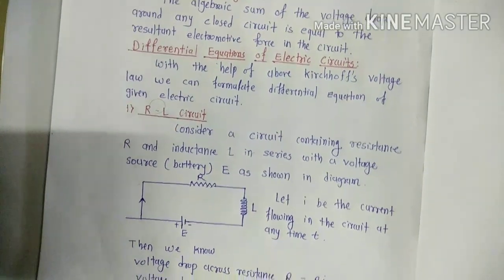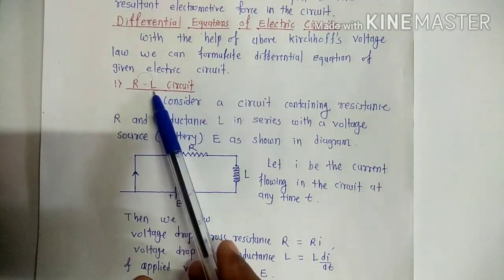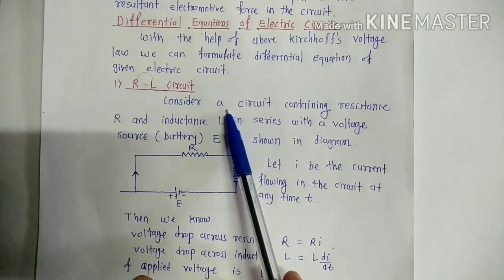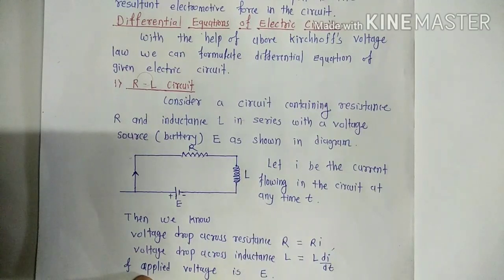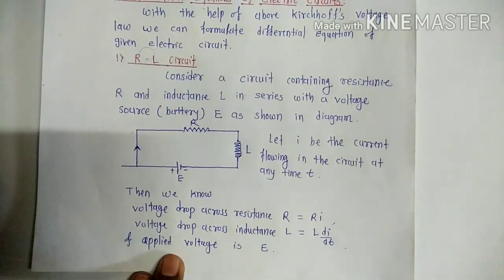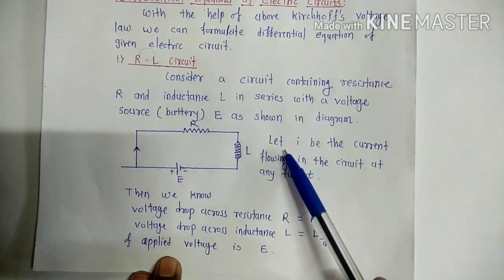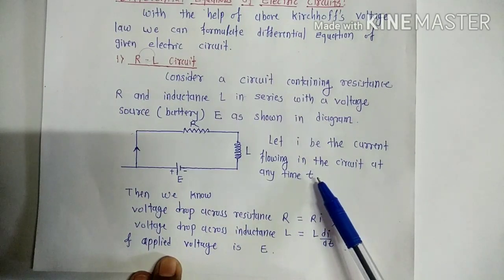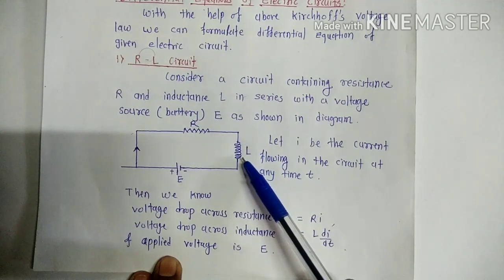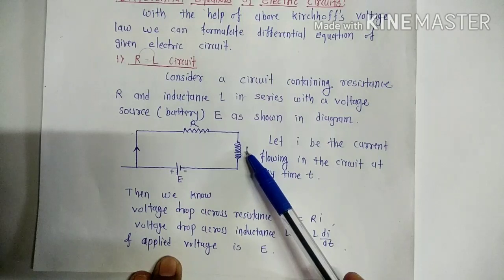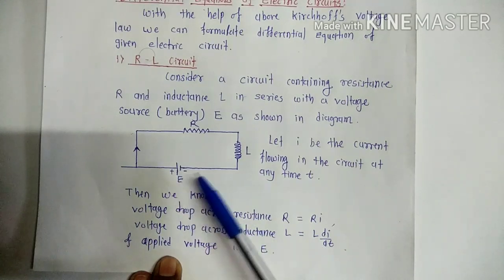We shall first discuss how to construct a differential equation for a given electrical circuit. Consider an electrical circuit containing resistance R and inductance L connected in series with a voltage source E, as shown in the diagram. Let I be the current flowing in the circuit at any time T. The voltage drop across resistance R is Ri, and the voltage drop across inductance L is L di/dt.